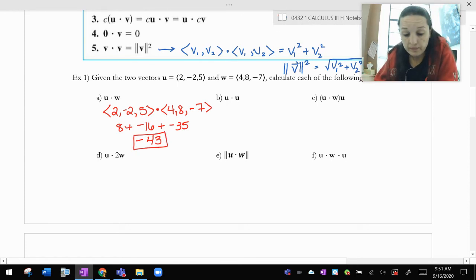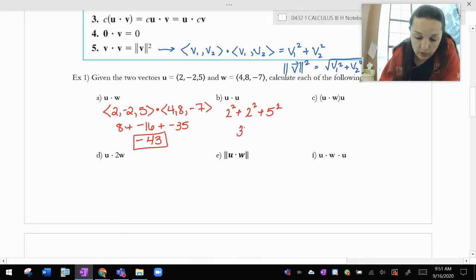Okay. That's just what I get. u dot u. Well, u dot u is just 2 times 2 plus negative 2 times negative 2 plus 5 times 5. So it's really 25 plus 8, which is what? 33.